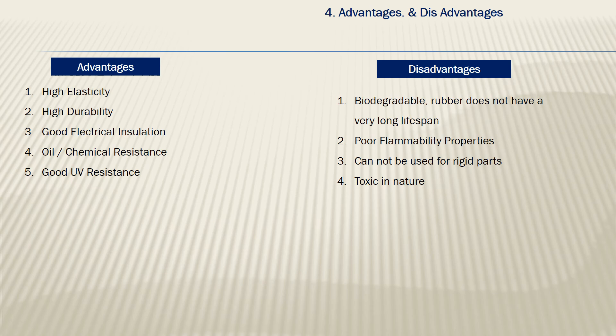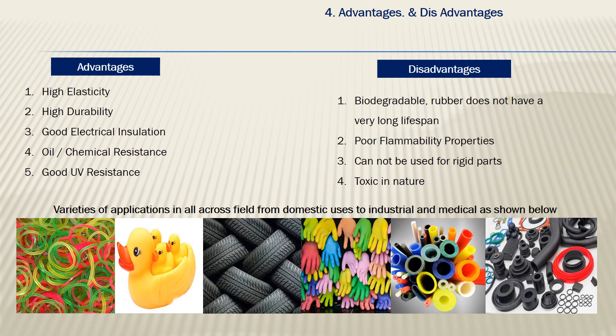Rubber is also toxic in nature. Based on its wide advantages, it is being used in various areas from domestic to industrial applications, even medical applications, as you can see in the images below. Day-to-day life products include tires in automobiles, gloves, tubes, pipes, cushions, bellows, O-rings, and sealings. Across all these fields, rubber is being used widely.